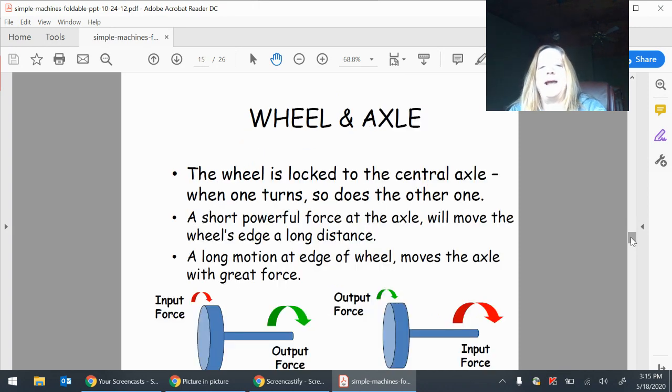Wheel and axle. The wheel is locked to the central axle. When one turns, so does the other one. A short, powerful force at the axle will move the wheel's edge a long distance. A long motion at edge of wheel moves the axle with great force. There are two examples there.